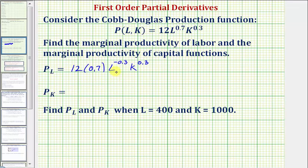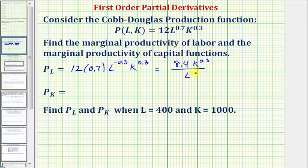Let's simplify and write this using only positive exponents. 12 times 0.7 is 8.4, so we'd have 8.4. K has a positive exponent, so that would be in the numerator: K to the 0.3. Because L has a negative exponent, we move it to the denominator, which changes the sign of the exponent, giving us L to the positive 0.3 in the denominator. This is the marginal productivity of labor function.